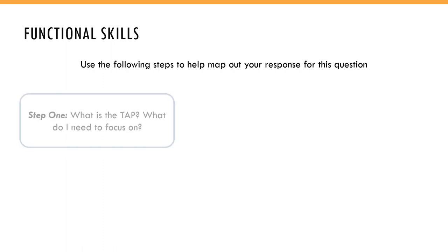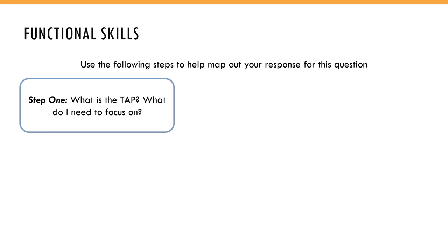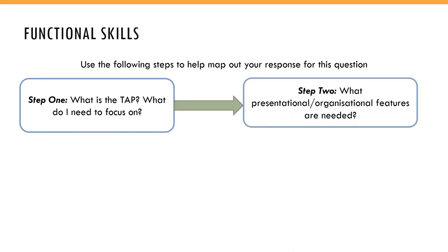Step one: identify the TAP — what do I need to focus on? That means Topic, Audience, and Purpose. Step two: what presentational or organisational features are needed? For example, the question clearly states it needs to be a blog, so how would you lay that out? What features would you use to make sure it actually looks like a blog?